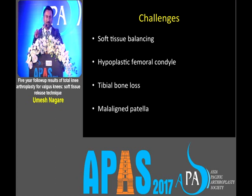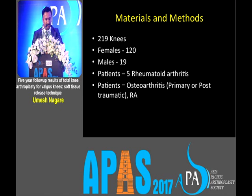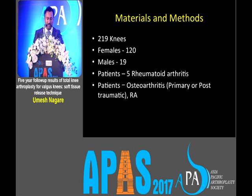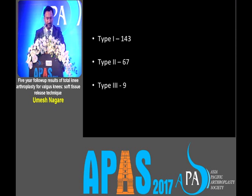The aim of the study was to find out, when you do the soft tissue release, what sequence you follow and how you choose the implants. We had 219 knees: 120 females, 19 males, 5 rheumatoid arthritis patients, and the others were osteoarthritis or post-traumatic osteoarthritis.